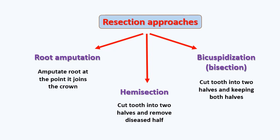In hemi-sectioning, the tooth is cut into two halves and one full diseased half is removed. Bicuspidization is used when there is a problem in the furcation area of lower molars — the tooth is cut into two halves and both halves are kept in the mouth as two premolars, two bicuspids.